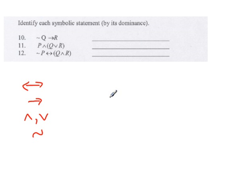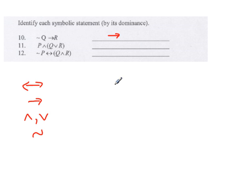For logic, anything on the outside of parentheses is more dominant than anything on the inside. So number 10 has no parentheses. We look to the chart, and what has more dominance between the negation and the conditional would be the conditional. You can either write the symbol or write the word — it doesn't really matter.